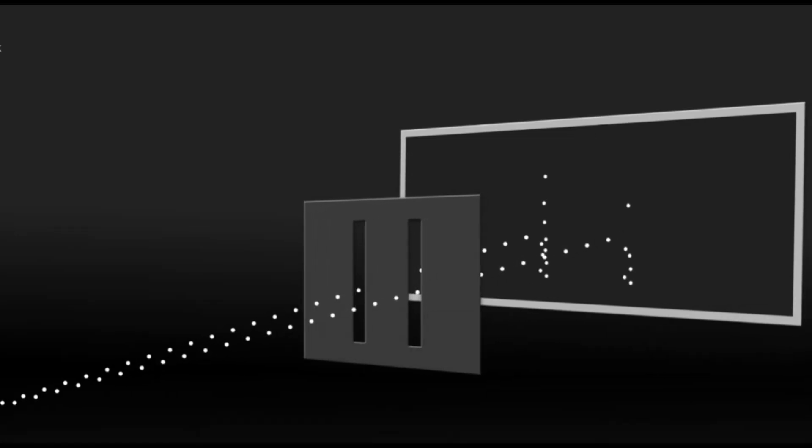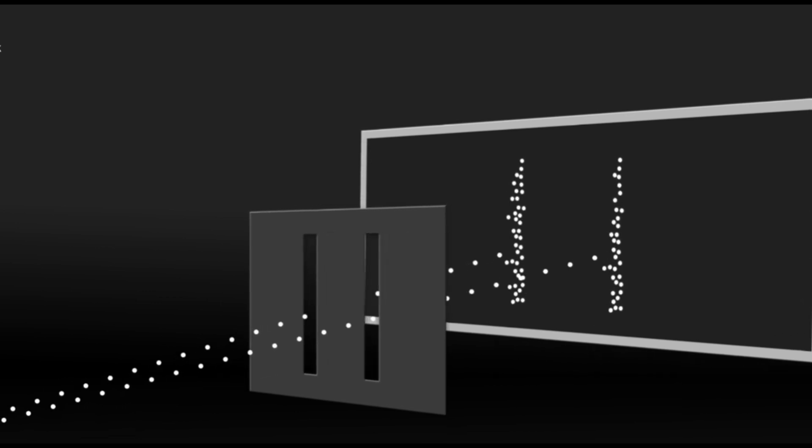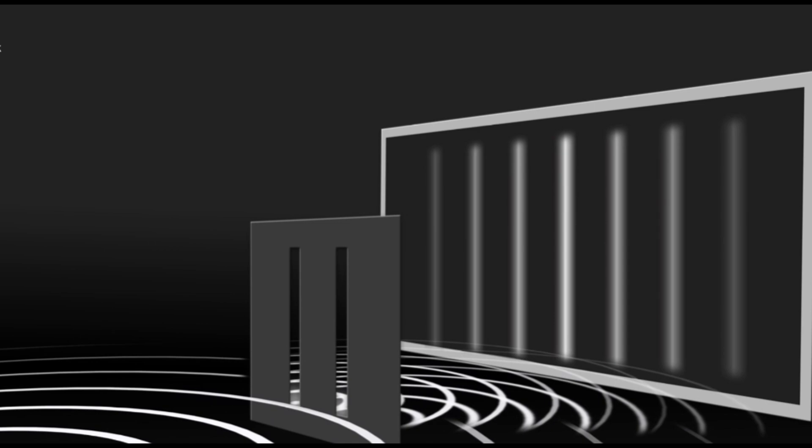In classical physics, an object can only exist in one form at a time. For instance, if something is a particle, it can't simultaneously be a wave. But in quantum mechanics, a single entity can exist as both a particle and a wave.